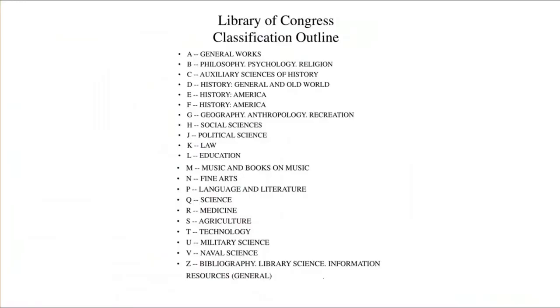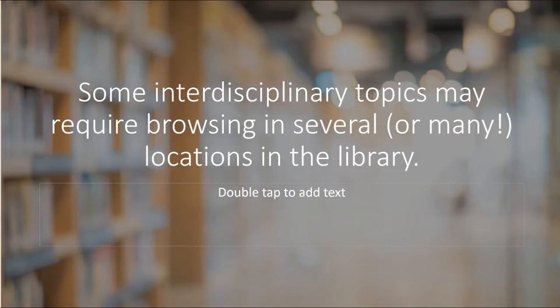The reason for this, as we see with this outline of the Library of Congress scheme, is that it is organized by discipline or the aspect of the topic — whether it's psychology, sociology, the sciences, education, law, etc. This means that some interdisciplinary topics may require browsing in several or many locations in the library.